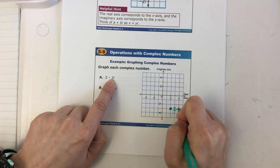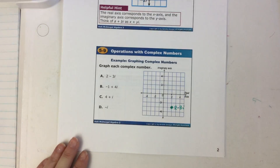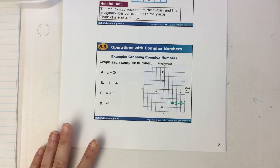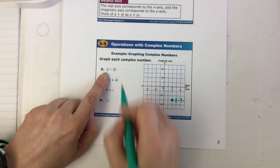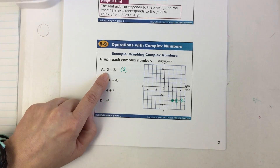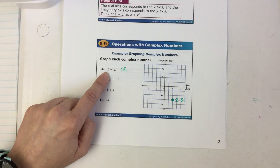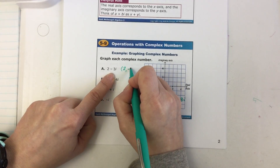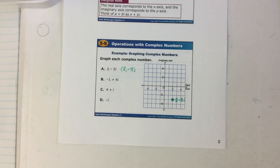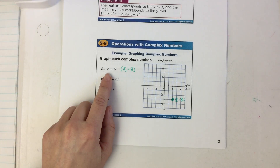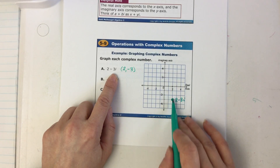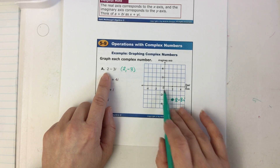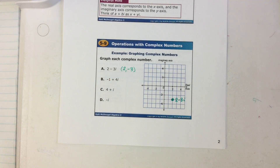So here's where 2 minus 3i is. Your first number is left or right, just like in the ordered pair. Your second number is up or down. If I look at this complex number, make sure that the real number comes before the imaginary number. It's the same thing as (2, −3) — the numbers are in the same order.